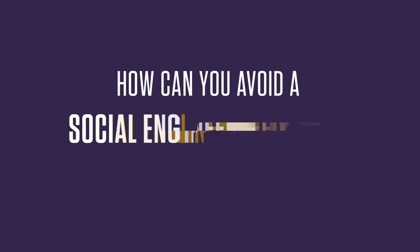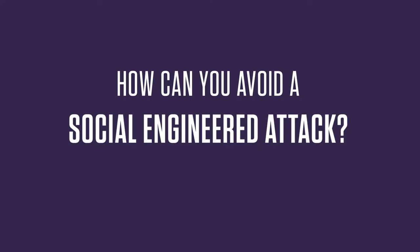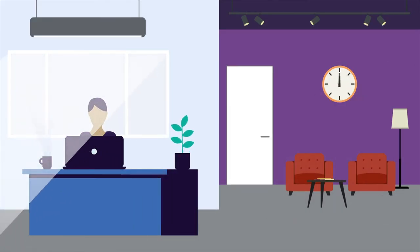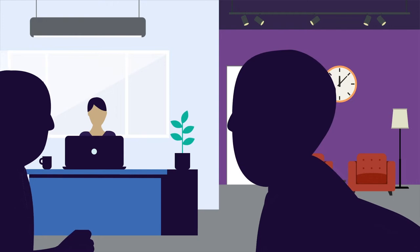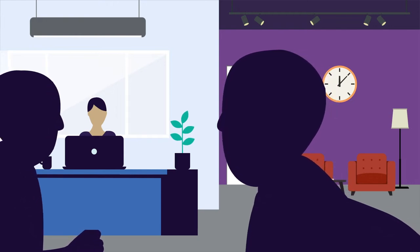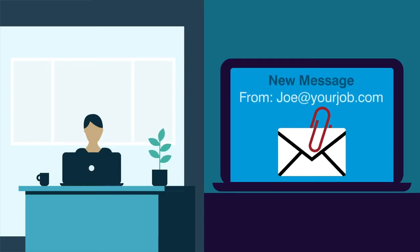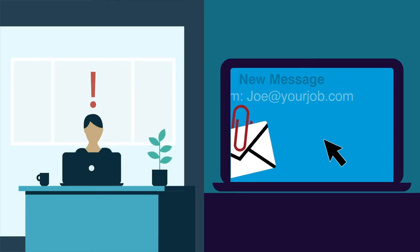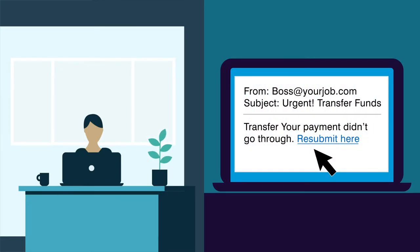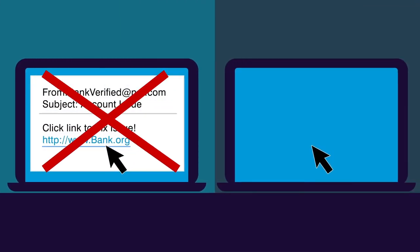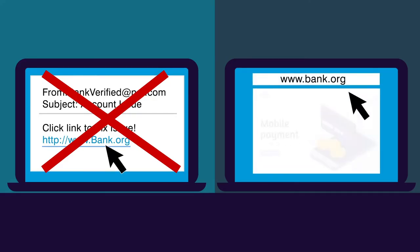How can you avoid a socially engineered attack? Here are a few tips. Slow down — they are relying on you to act impulsively, without thinking. Be suspicious of anything that came unsolicited or is unexpected, even if it appears to come from a trusted website, coworker, or even your boss. Don't click on links in emails. If it appears to come from a trusted site, go to the actual site to check your information.